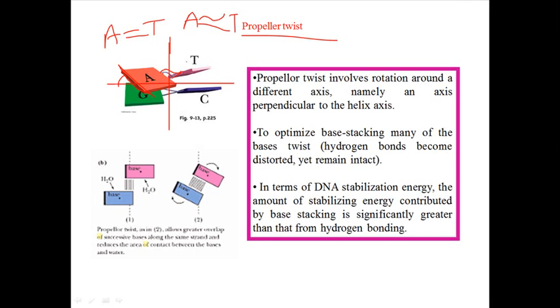This is called the propeller twist. Though the hydrogen bonds become distorted, they never get shriveled up—they remain intact. My message to you is that they get distorted but remain intact, so they do not usually break via the propeller twist.